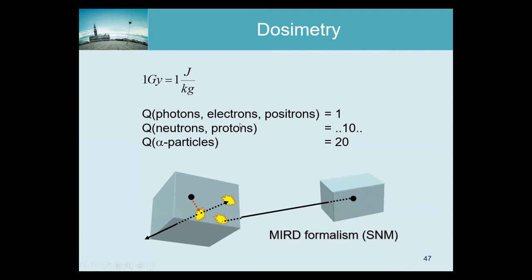We multiply the gray value by the quality factor to get sievert — or hopefully millisievert, because a sievert represents a lot of damage. The damage comes from harming DNA. We can repair single ionizations because of redundancy, but if several errors occur very close together in one DNA molecule, the redundancy is exhausted and repair fails. Heavy particles spread their energy over a shorter distance, creating many ionizations close together, greatly increasing the chance of multiple damages in a single DNA strand — which is why the same energy causes more damage. Alpha particles are therefore much more dangerous than photons.